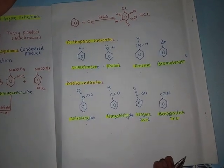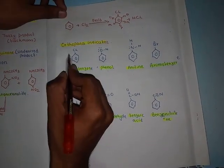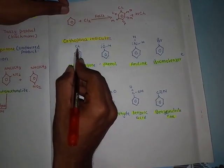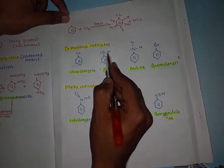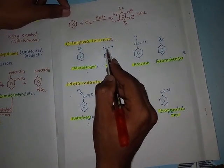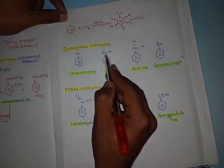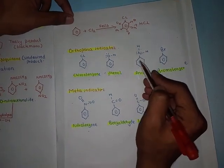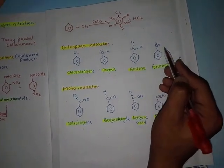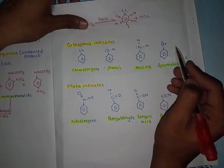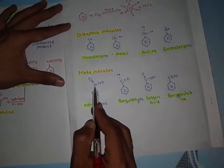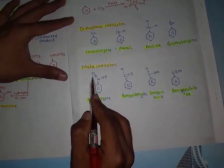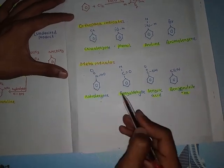For example, chlorobenzene — the central atom has a single bond, so it is an ortho/para indicator. Phenol — oxygen has a single bond, also an ortho/para indicator. Bromobenzene — bromine with a single bond is an ortho/para indicator. But where the central atom has a double bond, it becomes a meta indicator, like the nitro group with double bonds.